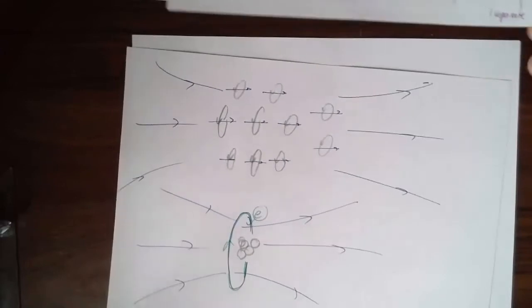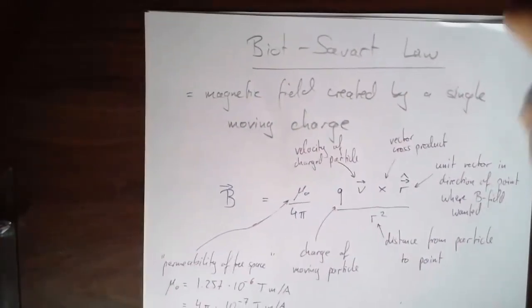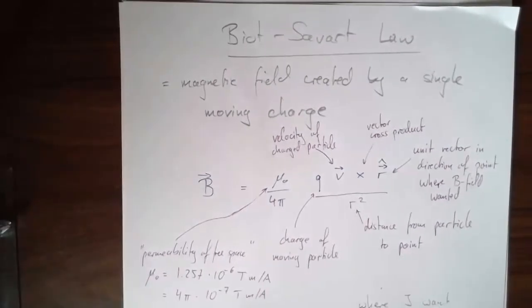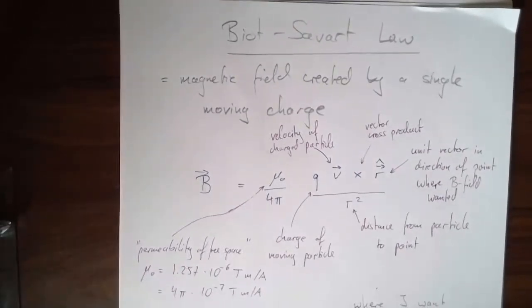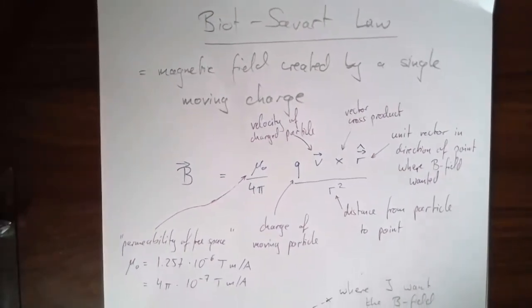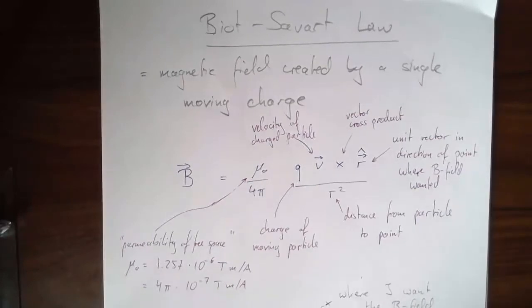Let me come to the next segment: the Biot-Savart law. I gave you a couple of equations for some arrangements of wires and currents — a long straight wire, a loop, a solenoid. All of those are ultimately derived from this law here. This law is somewhat complicated to apply, but like everything, if you've done it a couple of times it becomes manageable. You probably have to spend a little bit of time applying it to get used to it.